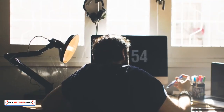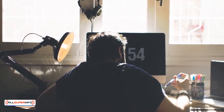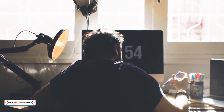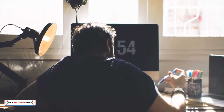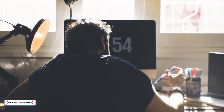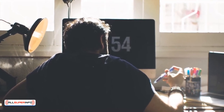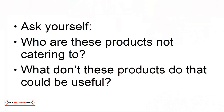1. Look at Existing Products. One way to find a gap in the market is to look at the existing products in that space. What you'll likely find is that a few companies have got the niche stitched up, but that there is still room for improvement and still room for new products. Ask yourself: who are these products not catering to? What don't these products do that could be useful?